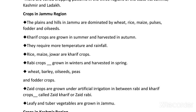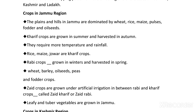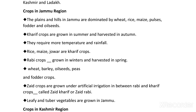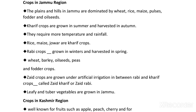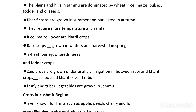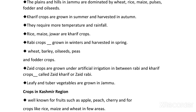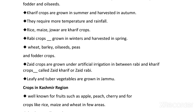Kharif crops are grown in summer and harvested in autumn. They require more temperature and more rainfall. Kharif crops include rice, maize, and jowar. Rabi crops are grown in Jammu region in winters and harvested in spring. Rabi crops include wheat, barley, oil seeds, peas, and fodder crops.